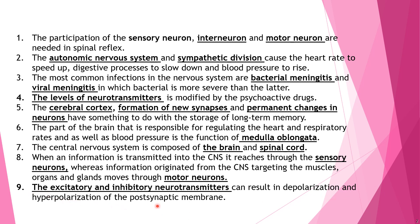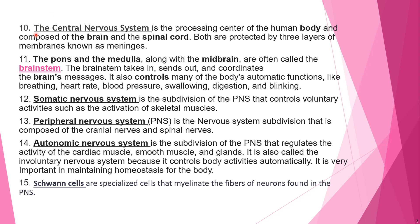Number nine: excitatory and inhibitory neurotransmitters can result in depolarization and hyperpolarization of the postsynaptic membrane. Number ten: the central nervous system is the processing center of the human body, composed of the brain and spinal cord. Both are protected by three layers of membranes known as meninges.